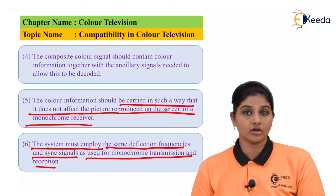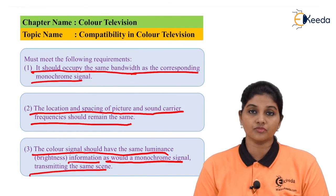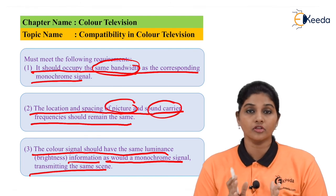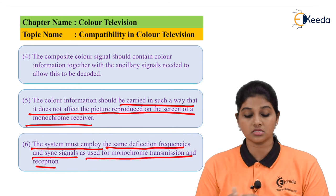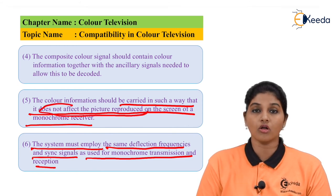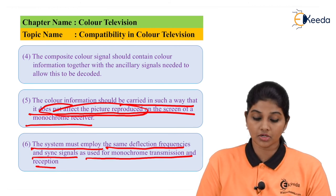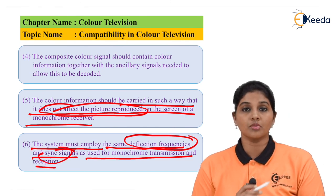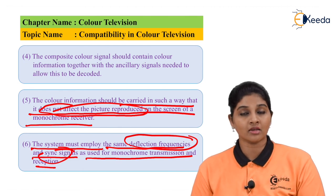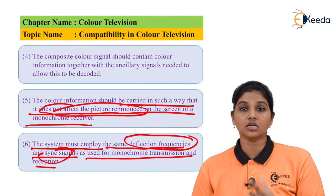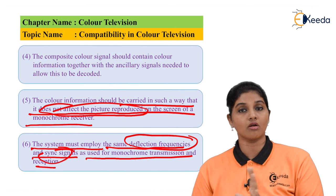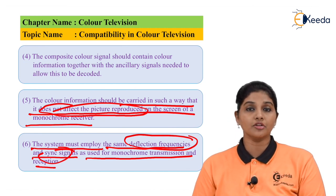To summarize the compatibility factors: first is bandwidth — it should be the same as monochrome; second is the spacing between the picture and sound carrier, which must be the same; third is luminance — the color signal must have the same luminance information as the monochrome signal; fourth is that the color signal must be transmitted without affecting picture quality on a monochrome receiver; and fifth is that deflection frequencies and sync signals must be the same, enabling a monochrome receiver to produce a black and white picture even when receiving a color signal.